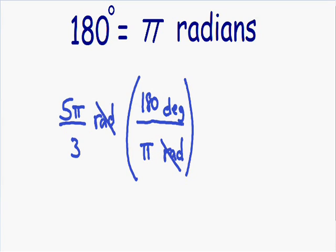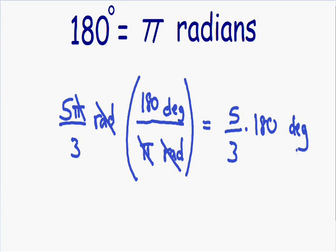Notice how the radians cancel out. We also have a pi that cancels out. We are left with 5 over 3 in the front, and that is multiplied by 180 degrees. To simplify, you can multiply 5 over 3 times 180 on your calculator, or you can cross multiply. If we cross multiply, the 3 becomes a 1 and the 180 becomes a 60, so we're left with 5 times 60, which is 300.